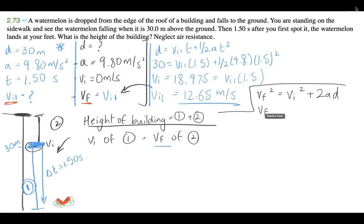So it's going to be VF squared minus VI squared over 2A is equal to D. And if I plug in my values, I get 12.65 squared over 2 times 9.8.